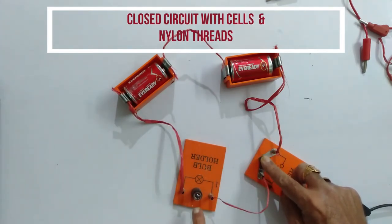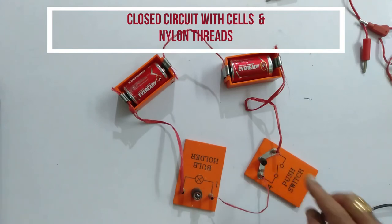But still the light is not glowed. So from this activity, what we can conclude is that not only the power is required, but also the wires which can carry the charge through them. Those are called conductors. So conductors are also required.